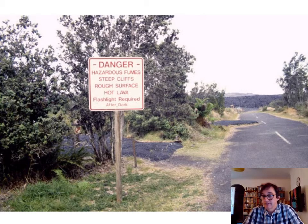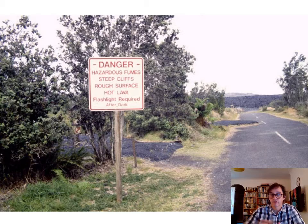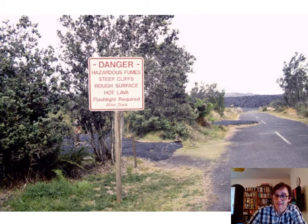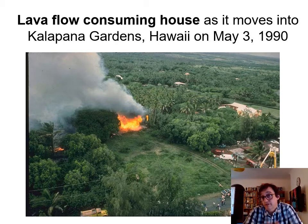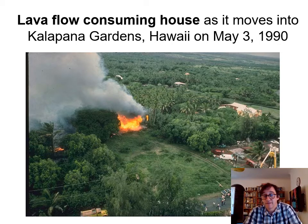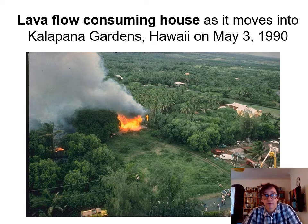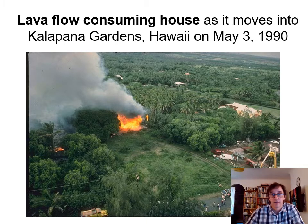More images from Hawaii. They live with active volcanoes constantly. Here you can see a lava flow that has gone across a roadway — it'll have to be bulldozed out. Signage reads: danger, hazardous fumes, steep cliffs, rough surface, hot lava, flashlight required after dark. Here's an image from 1990 showing a lava flow that has ignited a building — someone's home. So this is how it can be a major threat to property. It's very hard, as we'll find out next lecture, to stop or divert a lava flow. Here's a fire truck that had been trying to extinguish the lava flow before it ignited this house, but to no avail unfortunately.